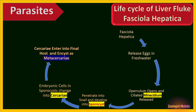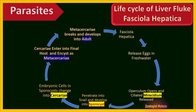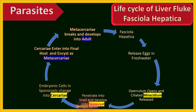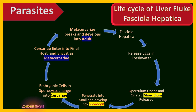Cercariae leave the snail and swim freely in water until they find their second or final host, which may be a vertebrate, invertebrate, or plant. When cercariae penetrate into the final host, they encyst and are called metacercariae. When this host is eaten by another intermediate host, the metacercariae break the cyst and develop into adults, which then lay eggs and the cycle repeats. That's it for today on Platyhelminthes — if you have any questions, do comment below.